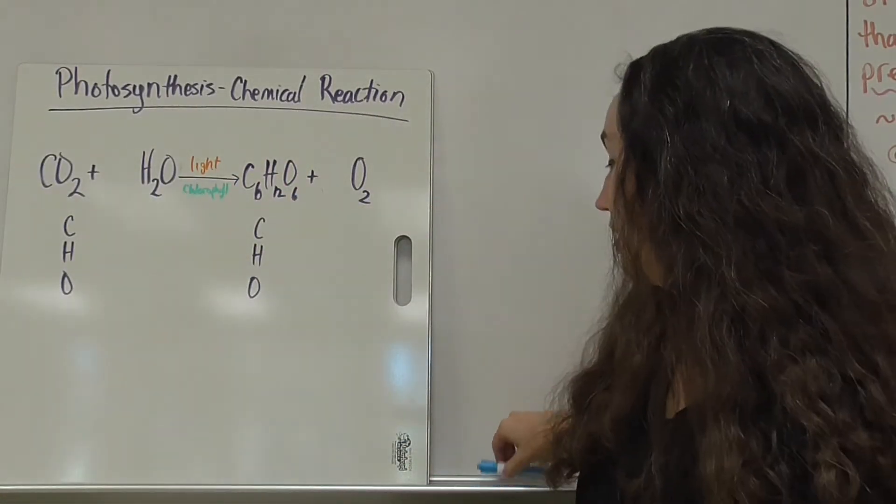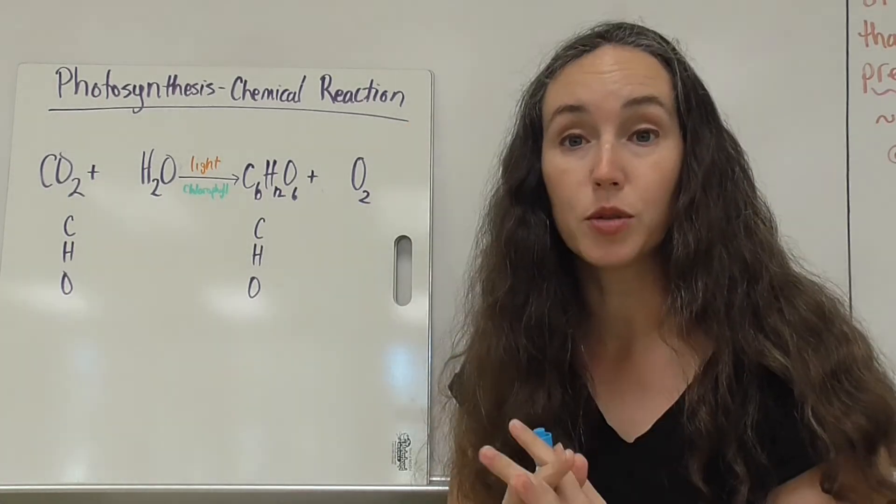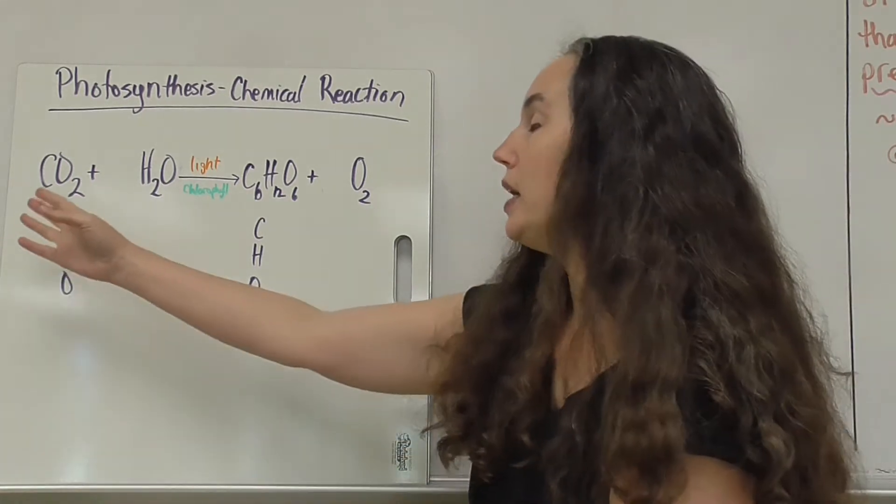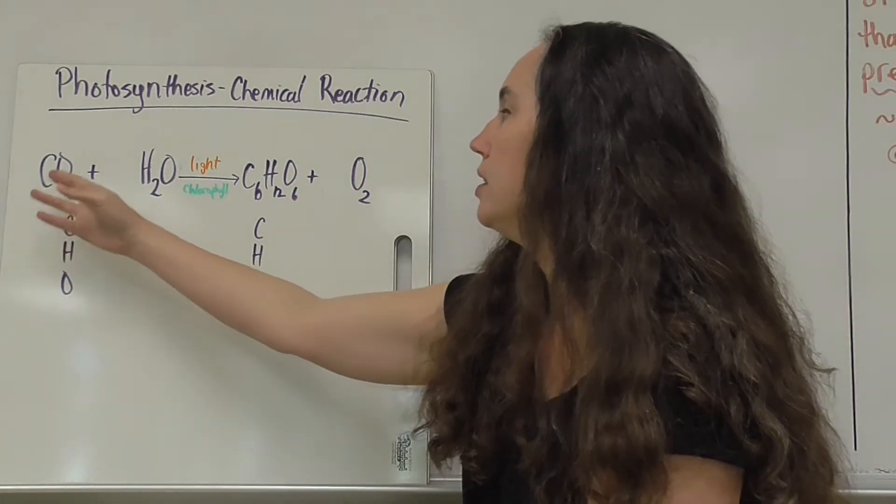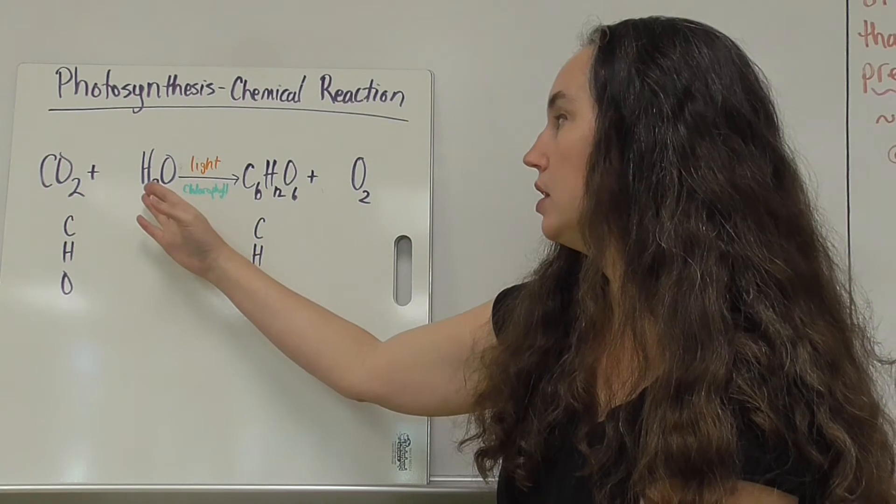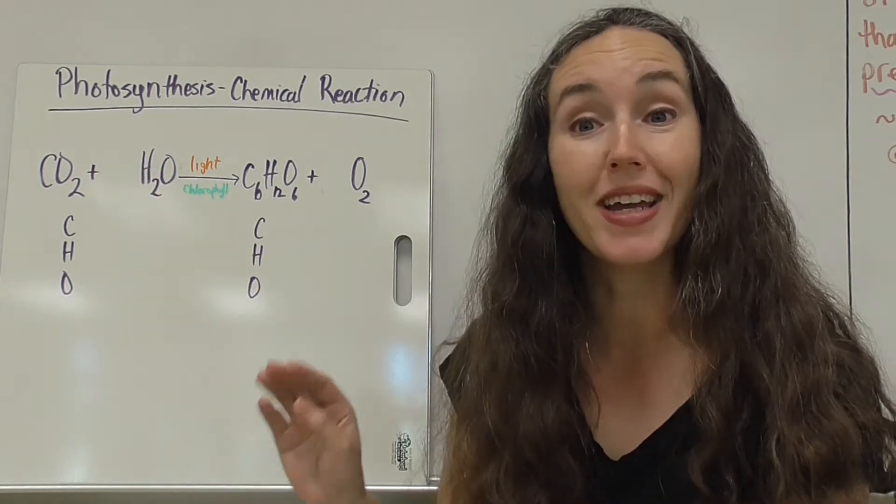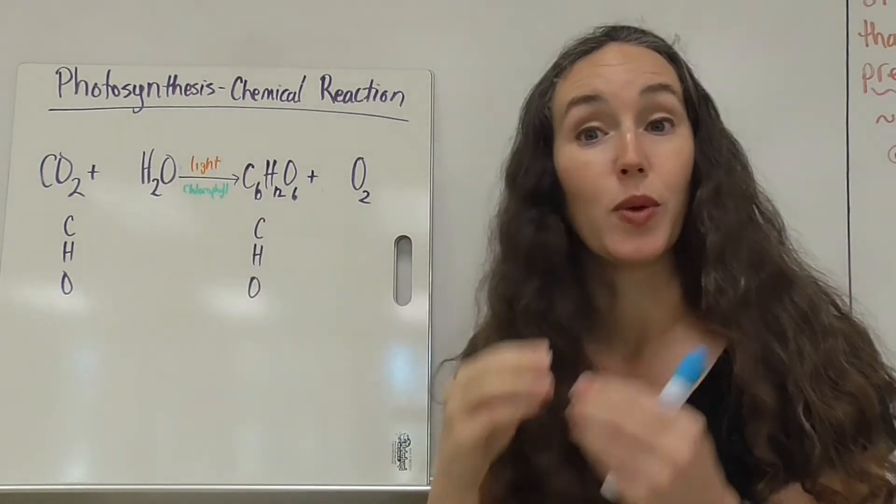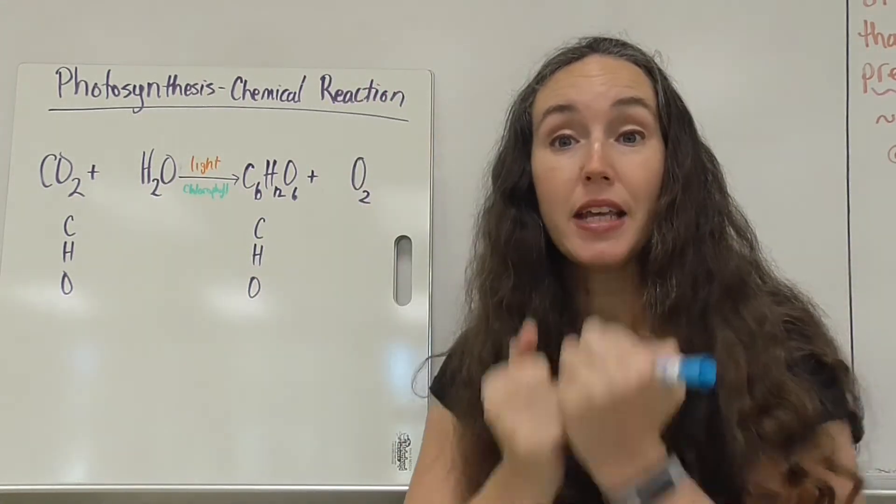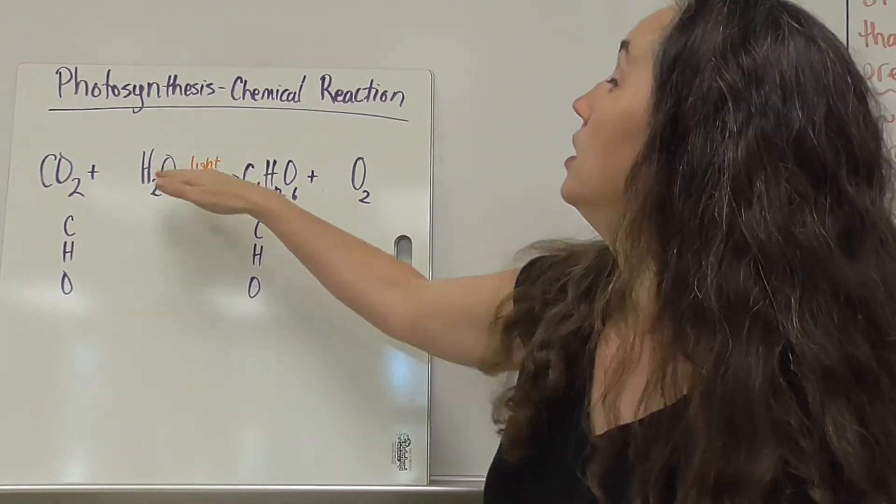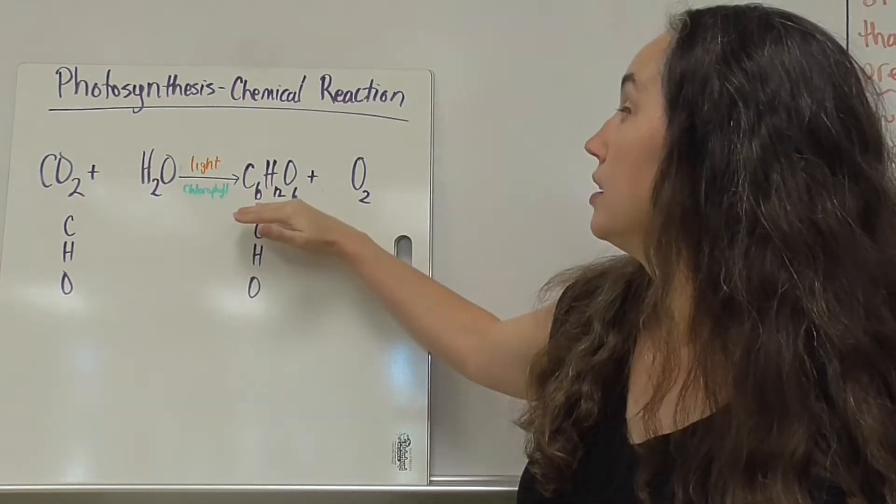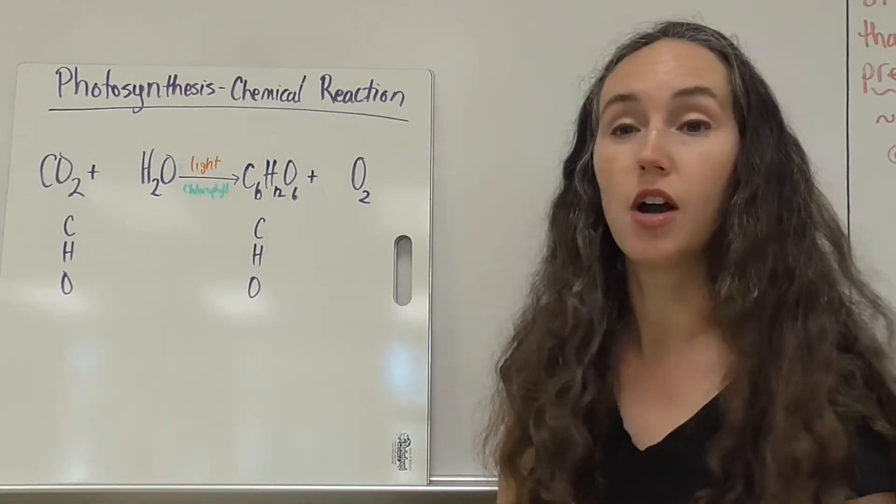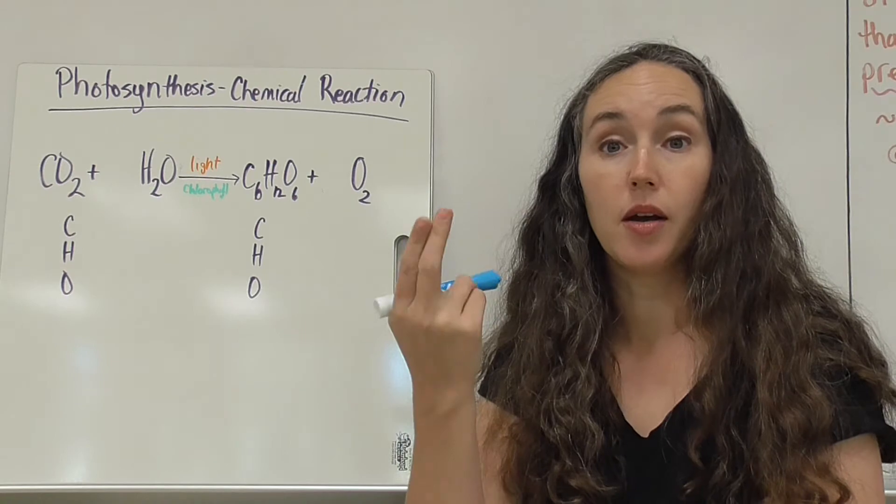We can summarize the process of photosynthesis as a chemical equation. So we can look at it as carbon dioxide plus water, those are our reactants, in the presence of light and chlorophyll, because we have to have those things to capture the energy, will produce glucose, C6H12O6, and oxygen, O2, as a waste product.